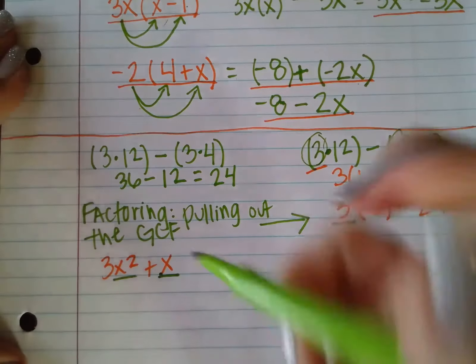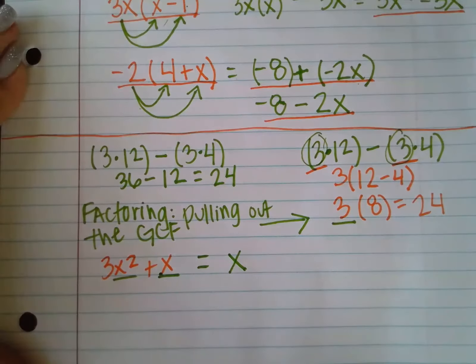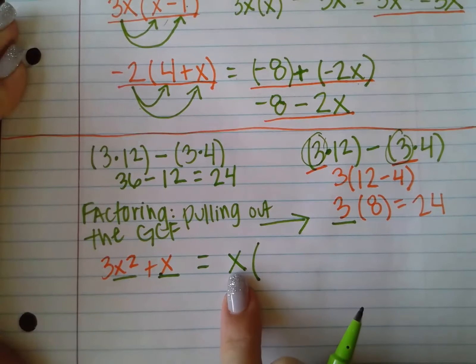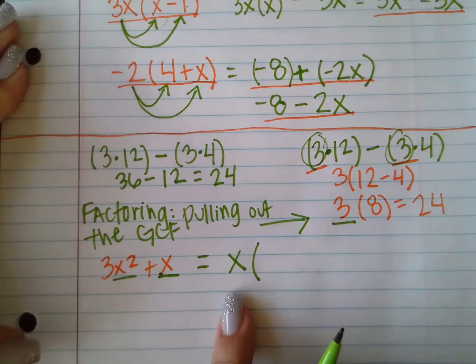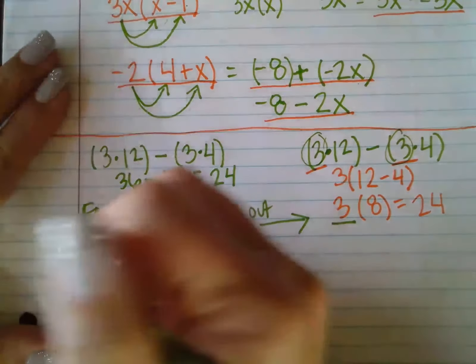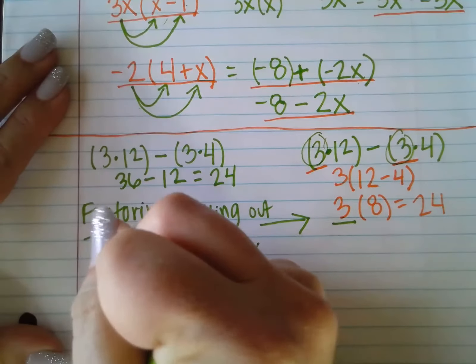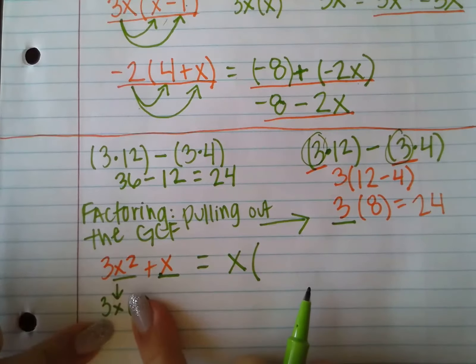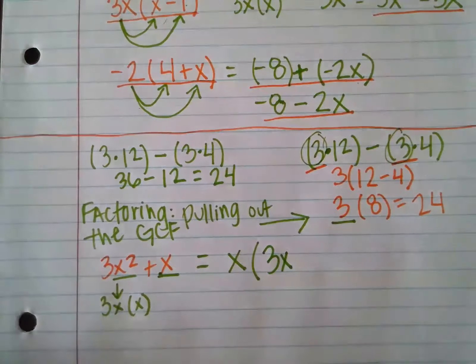One of them is x squared, and one of them is x. So if I factored out an x from this expression, what is left over is whatever I have to multiply by x to get the original terms. For example, if I factored out an x from 3x squared, remember 3x squared is the same thing as 3 times x times x. So if I factored out one of those x's, I am left with 3x. That's what's left over.